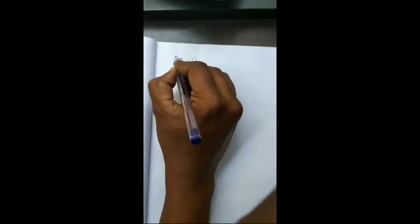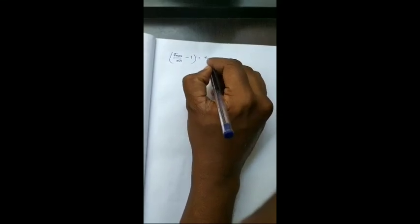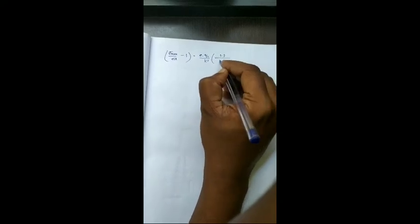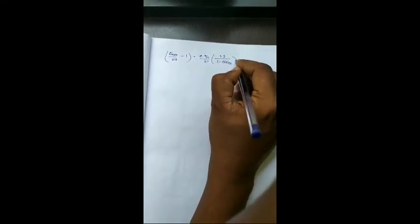The final modification will be like this: sigma max by sigma D minus 1 is equal to e into YC by K square into 1.2 divided by 1 minus sigma direct by sigma Euler.